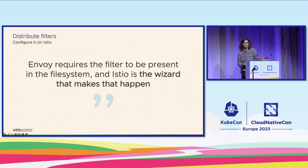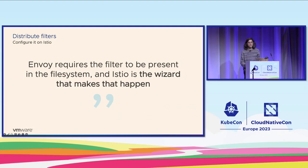There's a quote we use: Envoy requires a filter to be present in the file system, and Istio is the wizard that makes that happen.